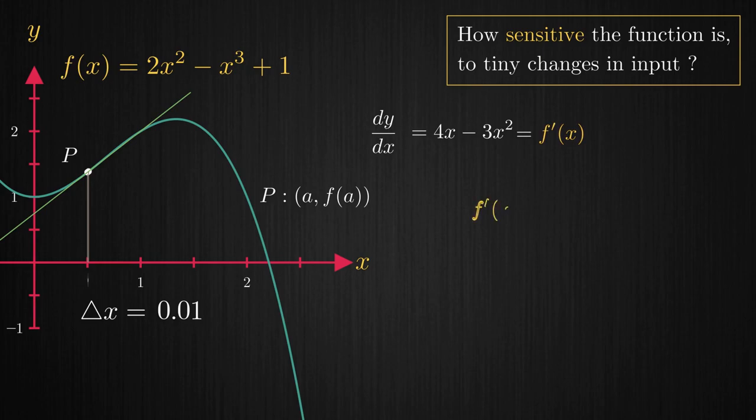If we know the function for derivative, multiplying its value at a point with the change in input dx gives the change in output of the function dy. Remember that this equation holds only when dx approaches 0 which otherwise is just an approximation.